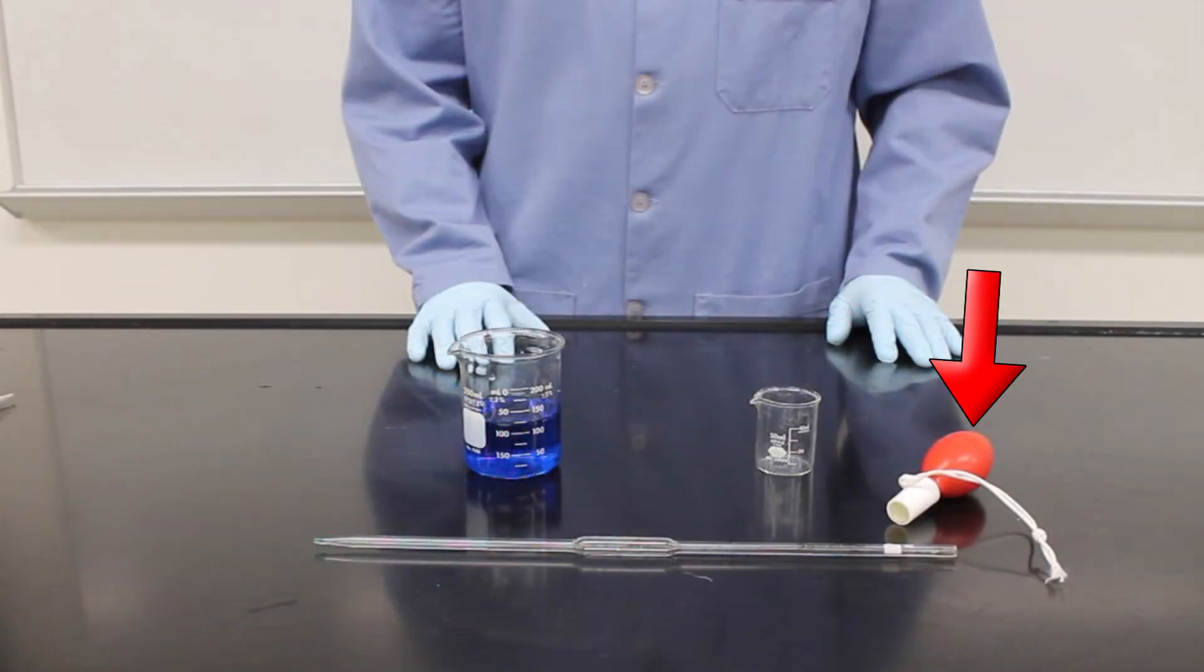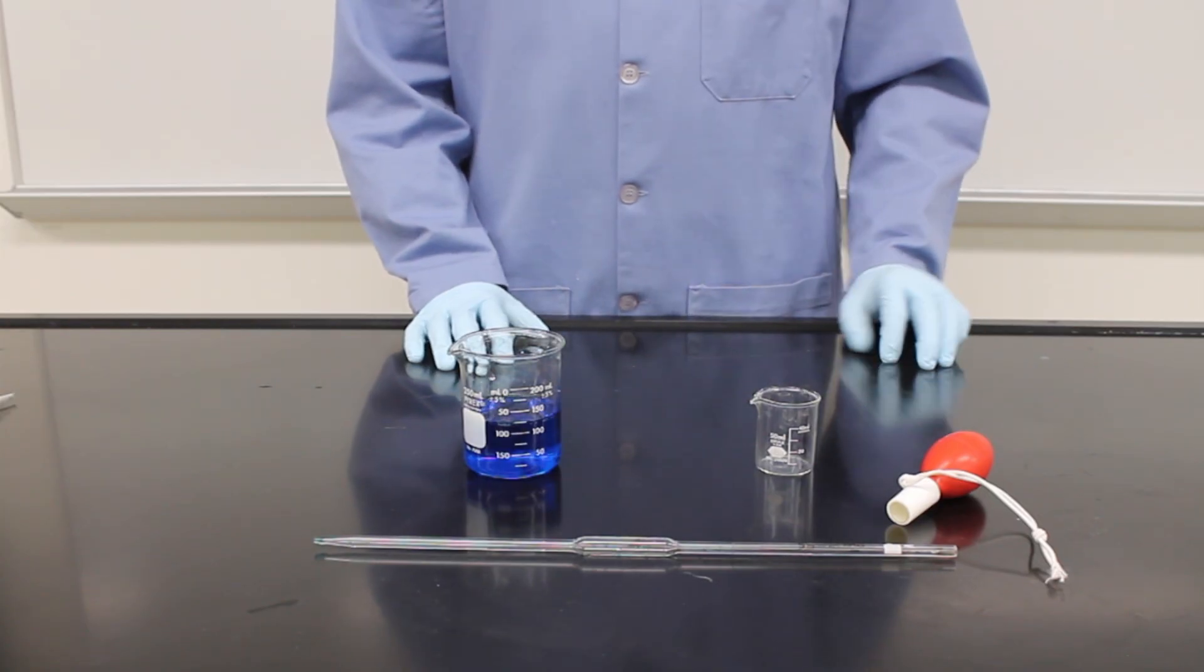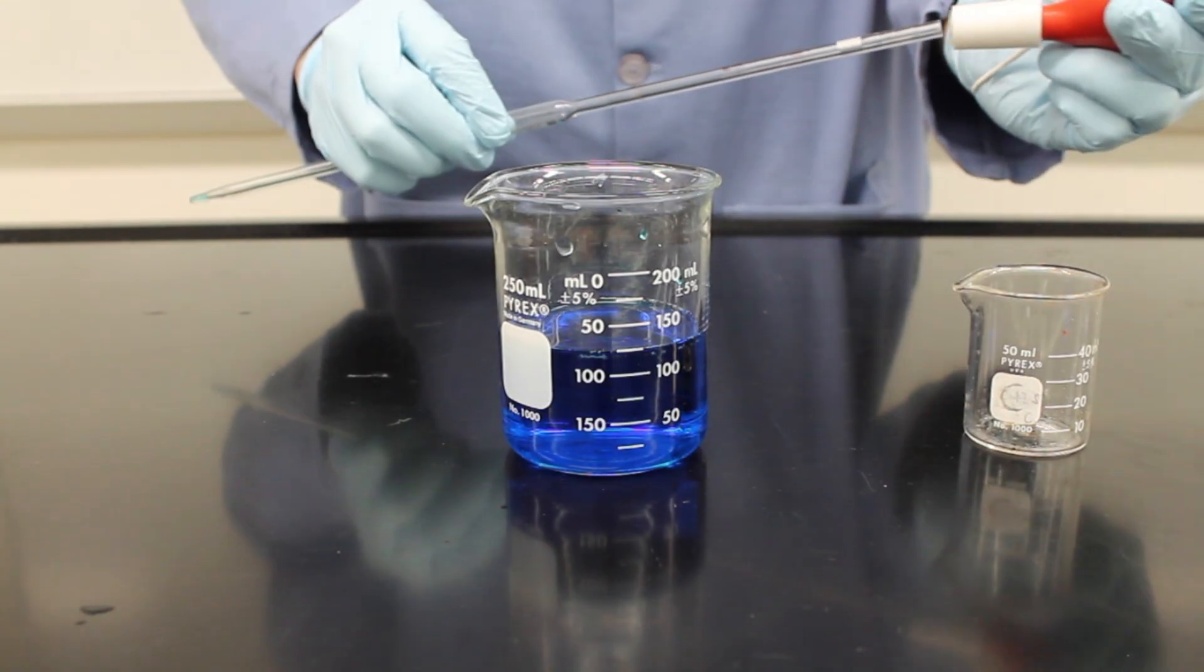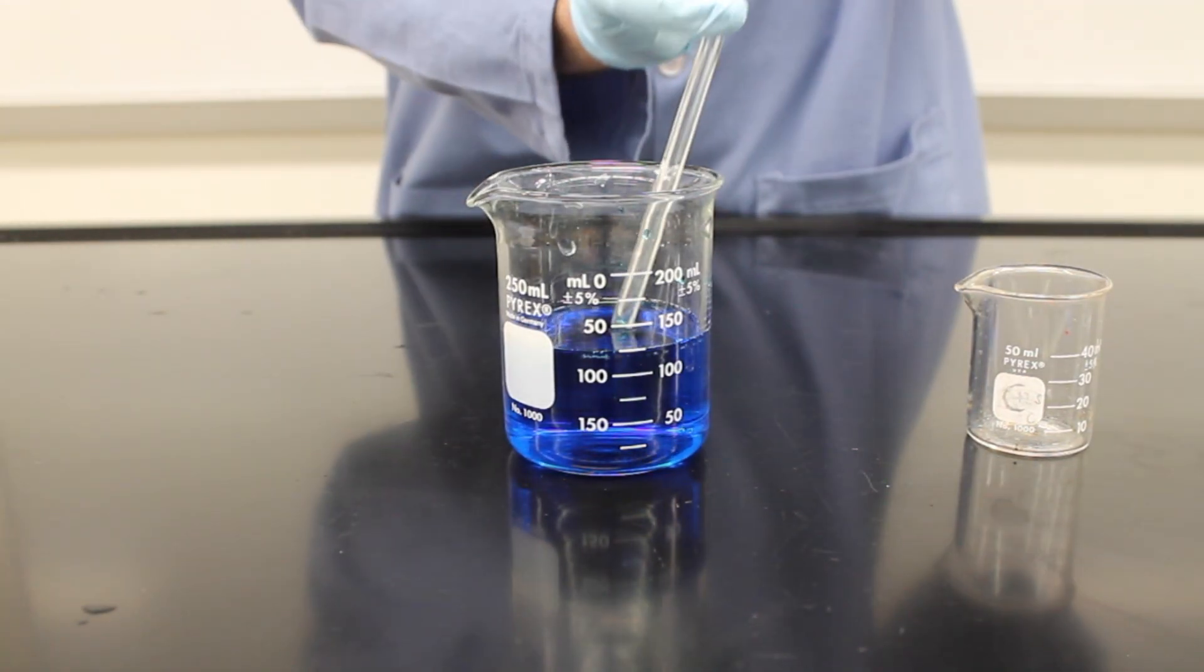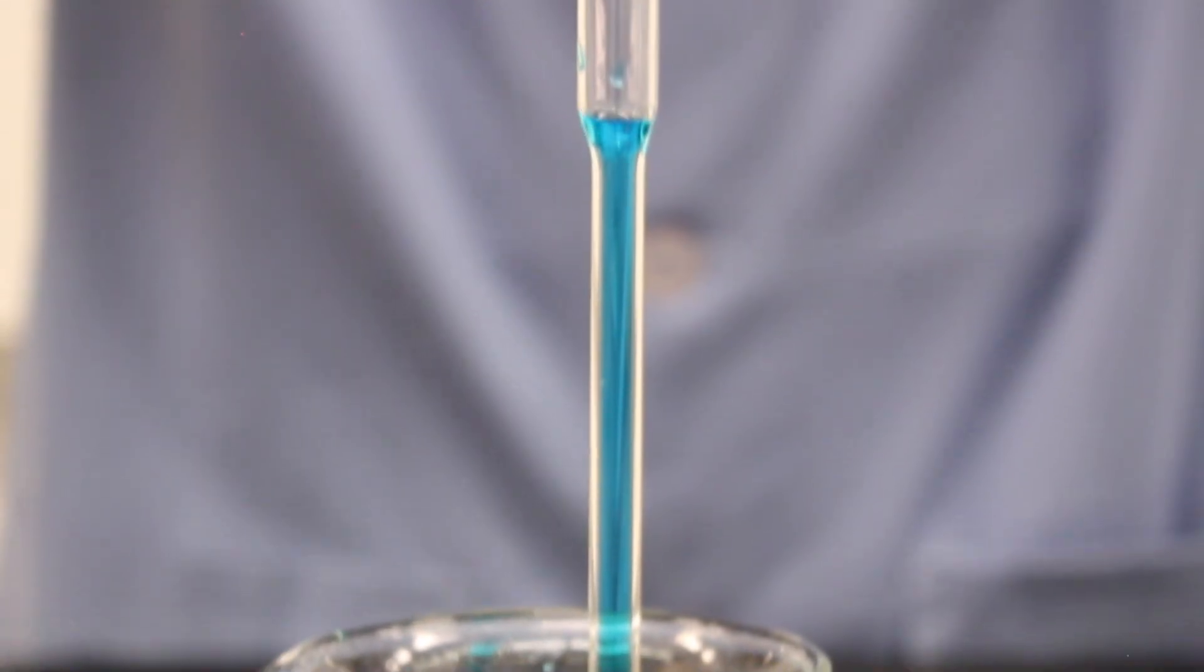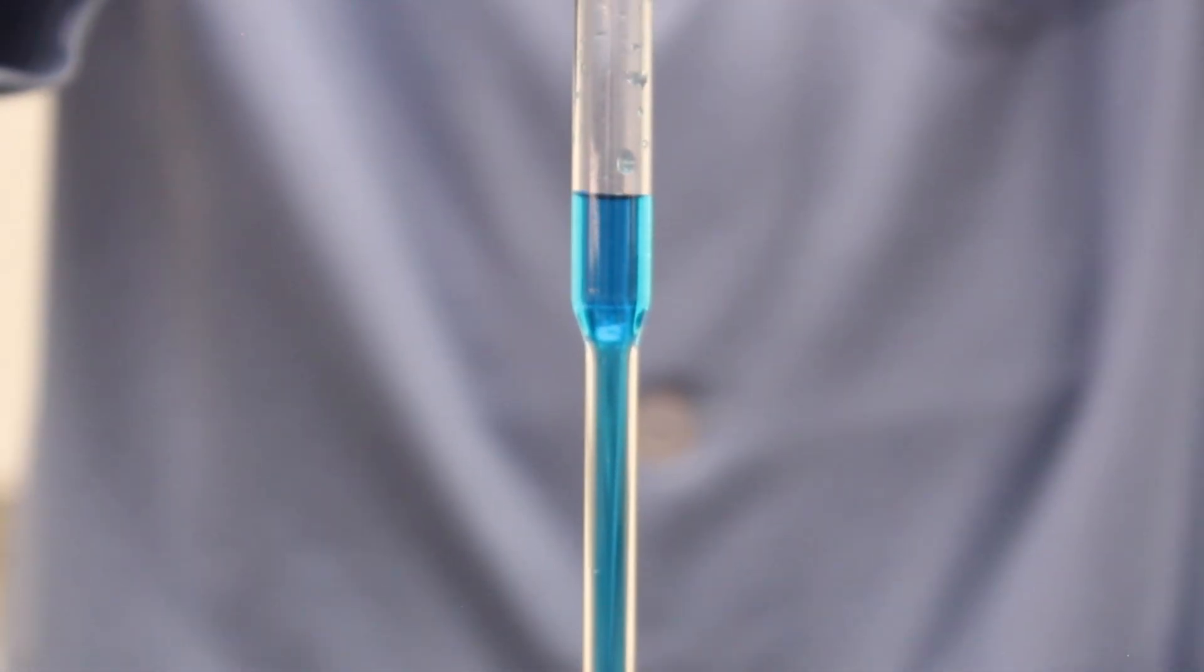Start by placing the pipette bulb string around your wrist and the bulb on the end of the pipette. Typically I squeeze the bulb before placing it onto the end of the pipette. Place the end of the pipette into your transfer liquid. As you slowly release the pressure on the bulb, the liquid will be drawn up into the pipette.